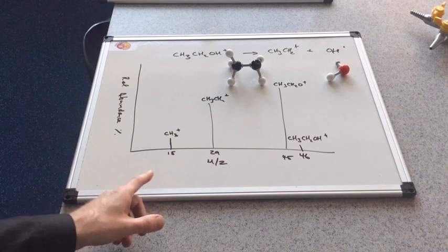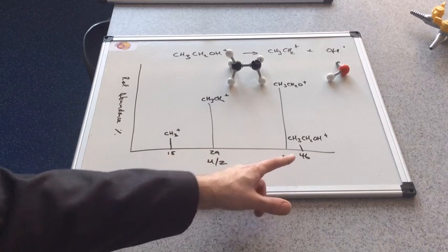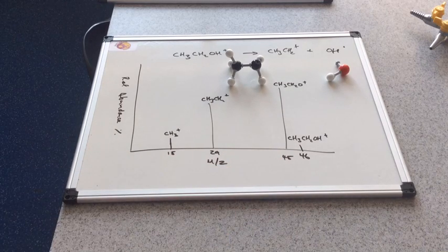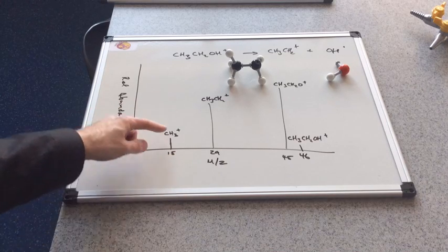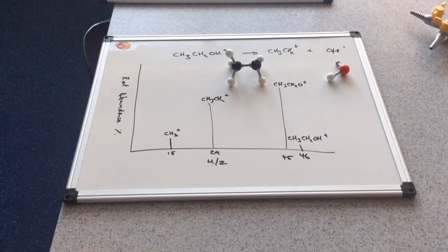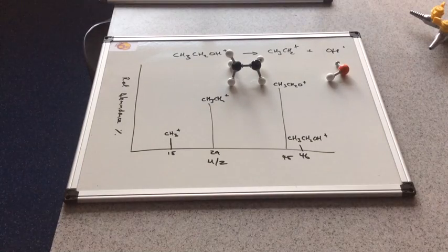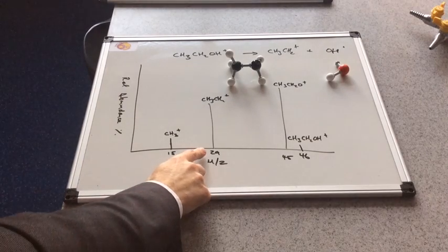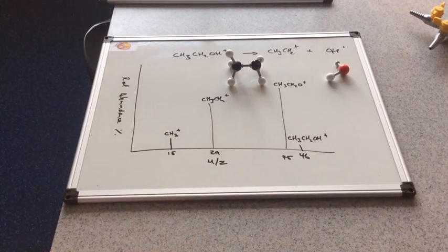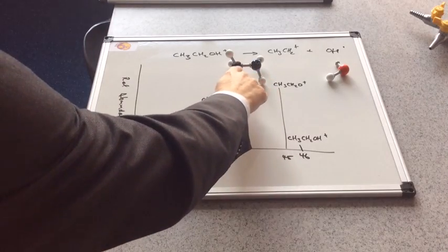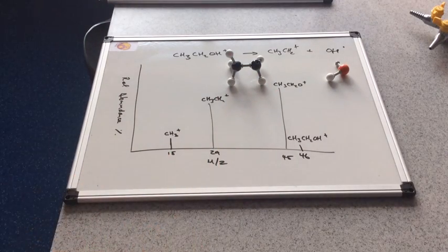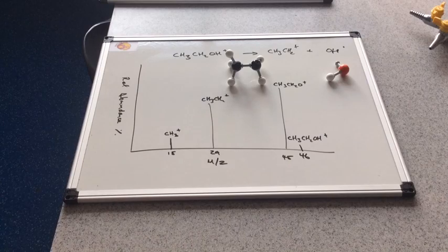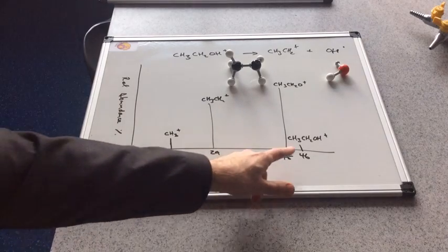You can appreciate now, we can start building up bits of the molecule from the fragment peaks. The peak at 15 is saying that we've got a methyl group in this molecule. We've got a fragment at 29, which obviously relates to the ethyl group. You can see that we can build up a picture of the molecule using these fragment peaks.